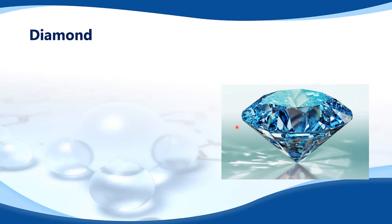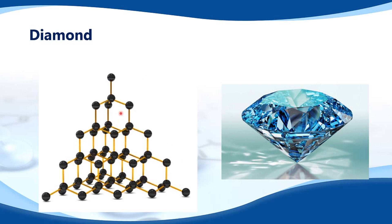Next is diamond. Diamond has a giant covalent structure made up of carbon, where each carbon atom is joined to four other carbon atoms. The bond angle between the carbons is 109.5 degrees. Because of these strong covalent bonds between atoms, diamond has a very high melting point and a very high boiling point, and it is also very hard. Diamond does not conduct electricity because it has no delocalized electrons.